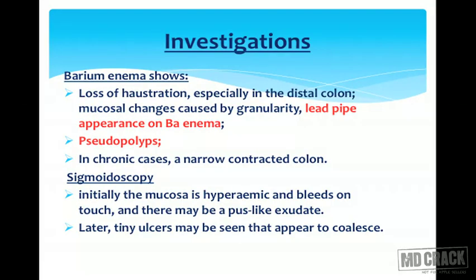In investigations, barium enema will show loss of haustration especially in the distal colon. Mucosal changes caused by granularity give rise to a lead pipe appearance on barium enema. Remember: lead pipe appearance means haustrations are not seen. Pseudopolyps may also be seen on enema, and in chronic cases a narrow contracted colon is seen.